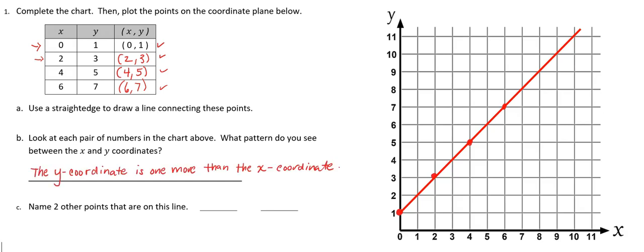Now we're going to name two other points that are on this line. I'm just going to go along, and I see that I have a point here. And if you notice, the ordered pair for that point is (3, 4). I go over 3, and up 4, and it follows that same pattern. The y coordinate is one more than the x coordinate.